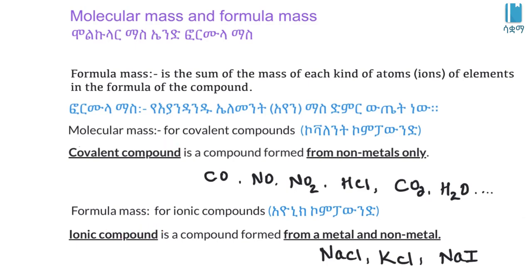Formula mass is used for ionic compounds. Ionic compounds are formed from metals and nonmetals, such as sodium and chloride, potassium and iodide, and sodium metal with other nonmetal ions. The formula mass is calculated using the formula unit of these ionic compounds.